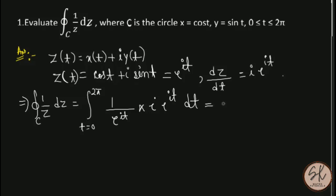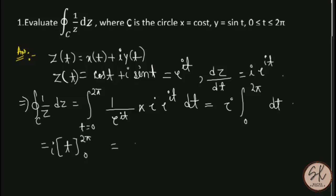This equals e^(−it) · i·e^(it) dt. The e^(it) terms cancel directly, so we are left with i times the integral from 0 to 2π of dt. This equals i · [t] from 0 to 2π, which equals i · (2π − 0).